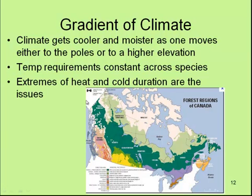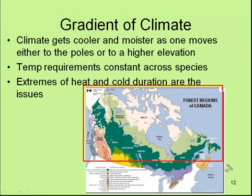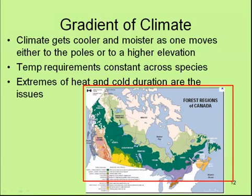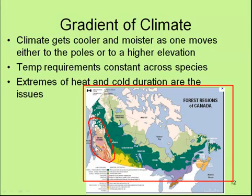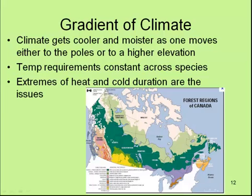Regarding the gradient of climate: the further north you go, the more different types of forest you'll find. In this diagram, you can see that the Boreal Forest band across Canada is clearly there. In British Columbia, there is high variability due to elevation and altitude, and the aspect — different sides of mountain tops — can greatly influence the forest.